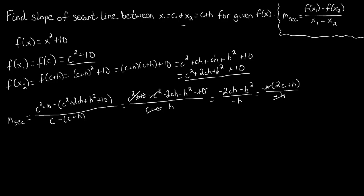They cancel each other out. And all we're left with for the slope of our secant line is 2c plus h.